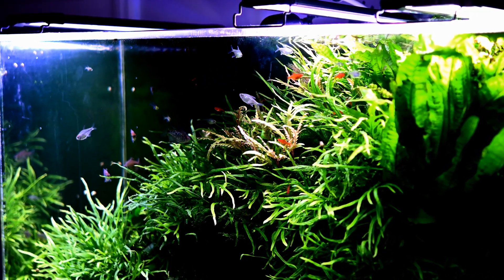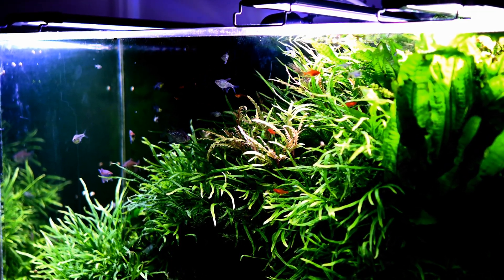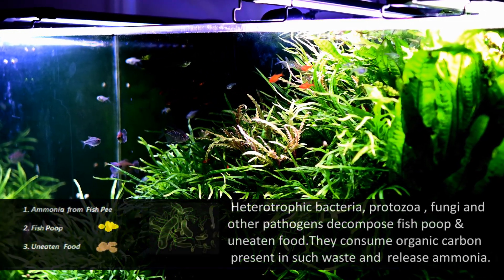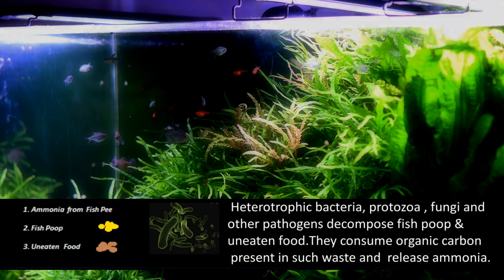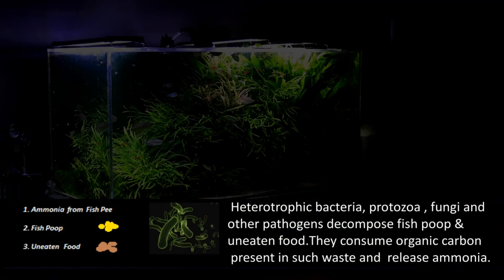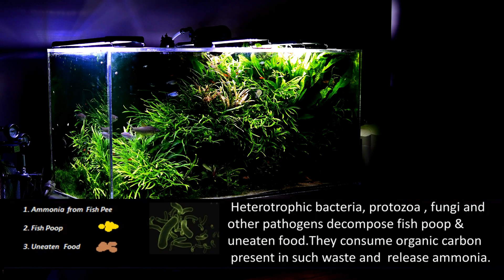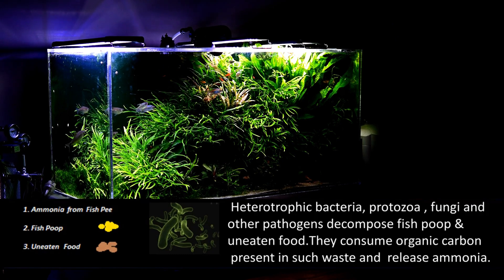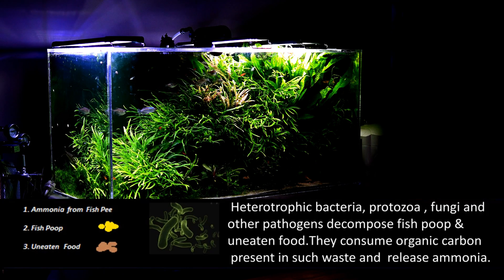Uneaten fish food and fish waste are decomposed in your aquarium by heterotrophic bacteria, protozoa, fungi and other pathogens. Organic carbon present in those materials is consumed by bacteria and pathogens and as a by-product ammonia is released. Please note, ammonia is poisonous for your fish.